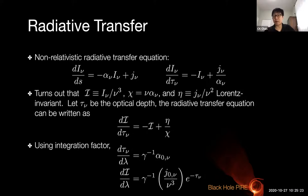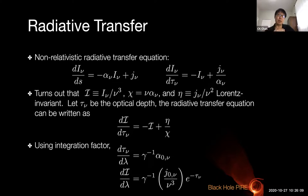For numerical integration, it is convenient to use an integrating factor to pull the optical depth out as a function of an affine parameter, which you also use in the geodesic integrator. This lets you integrate optical depth and intensity together with the geodesic. Another advantage: you can integrate backward from the image plane toward the black hole, and once you hit a region optically thick enough that you cannot see through, the factor becomes very small and you stop the numerical integration.